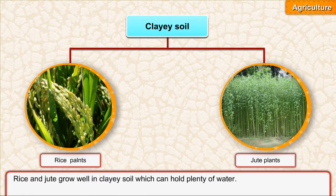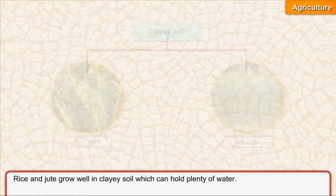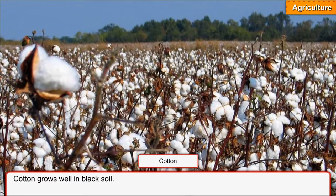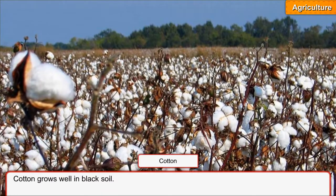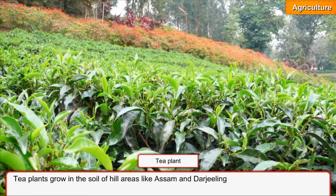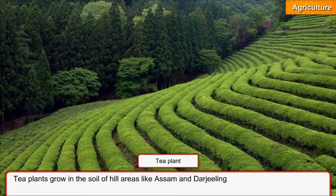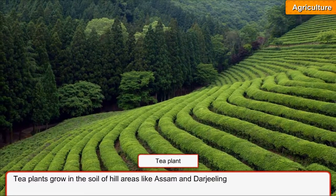Rice and jute grow well in clay soil which can hold plenty of water. Wheat, jowar and bajra grow in sandy soil. Cotton grows well in black soil. Tea plants grow in the soil of hill areas like Assam and Darjeeling.